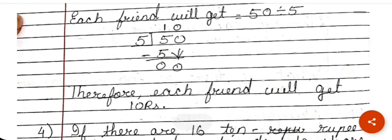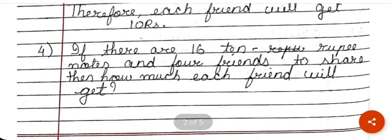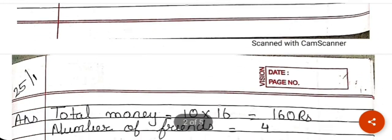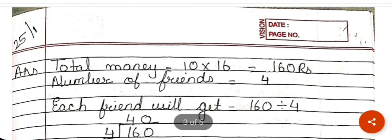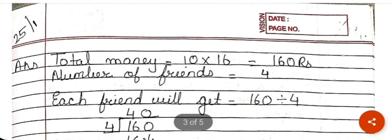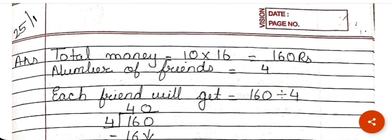If there are 16 ten-rupee notes and 4 friends to share, how much will each friend get? First we find the total money: 10 rupees × 16 = 160 rupees. Number of friends is 4. So each friend gets 160 divided by 4.